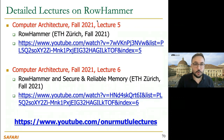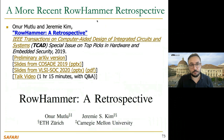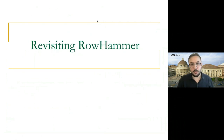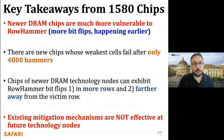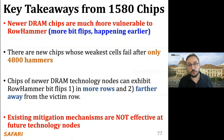You can see more detailed lectures on RowHammer at the following link. We also have more retrospective papers about RowHammer and future problems we might see, and a more recent RowHammer paper in the links. Let's look at RowHammer studies between 2020 and 2022. The first one is a study where we characterized 1,580 chips and showed that newer DRAM chips are much more vulnerable to RowHammer.